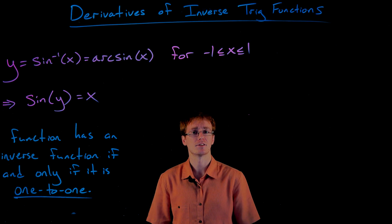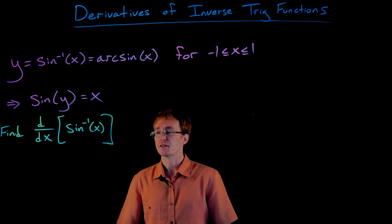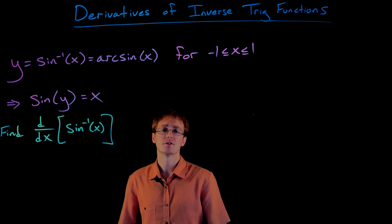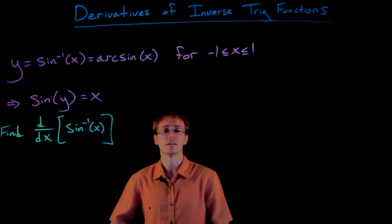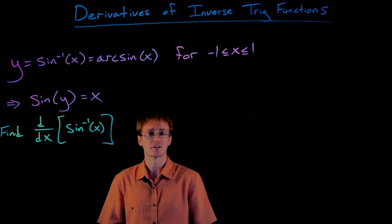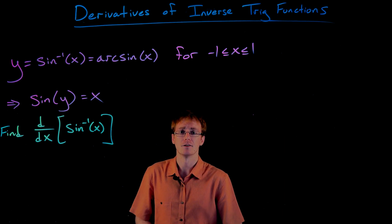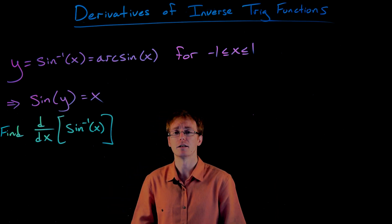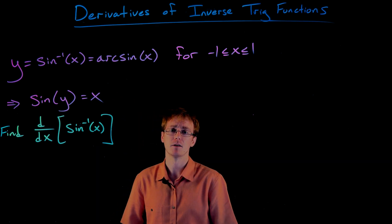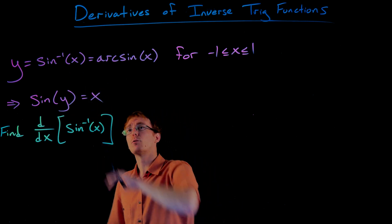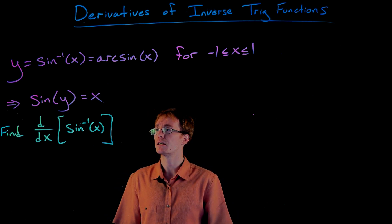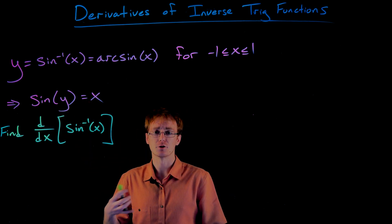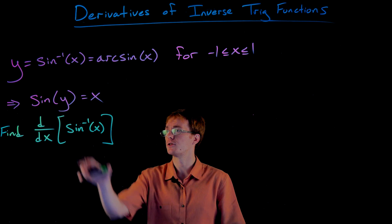So with that review of our inverse sine function out of the way, let's go ahead and find the derivative of our inverse sine function. To do this we're going to use the process of implicit differentiation. We actually always end up using implicit differentiation whenever we want to find the derivative of an inverse function, at least from scratch. So if you're trying to find the derivative of some new inverse function, you're probably going to use implicit differentiation. We get started by going back to the definition: if y is equal to sine inverse of x, then sine of y is equal to x.